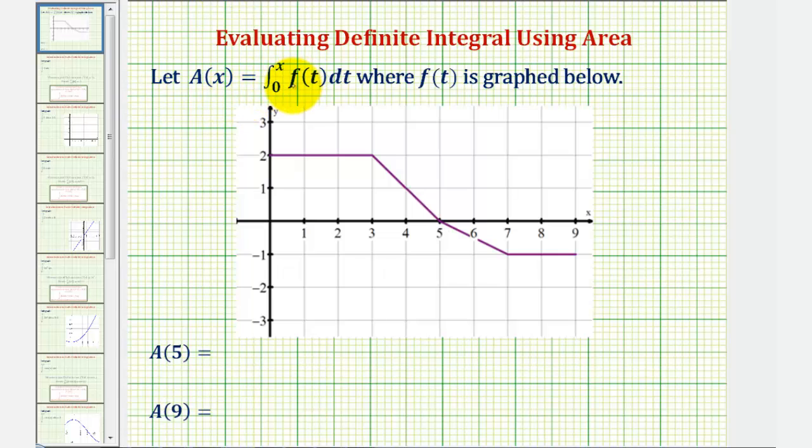We're given A(x) equals the integral of f(t) from zero to x, where f(t) is graphed below. We want to find A(5) and A(9).